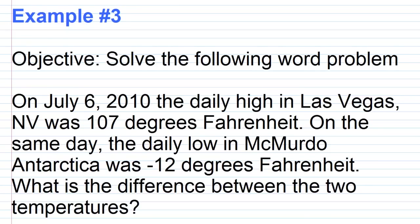For problem three, the objective is to solve the following word problem. On July 6, 2010, the daily high in Las Vegas, Nevada was 107 degrees Fahrenheit. On the same day, the daily low in McMurdo, Antarctica was negative 12 degrees Fahrenheit. What is the difference between the two temperatures?